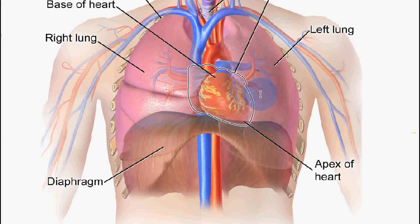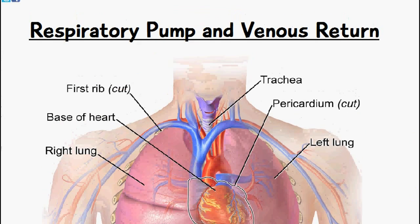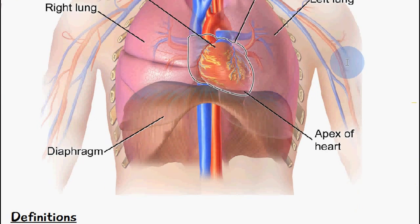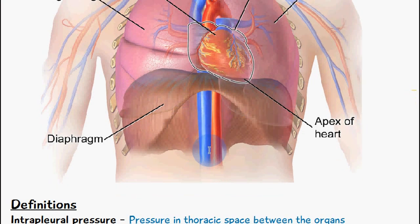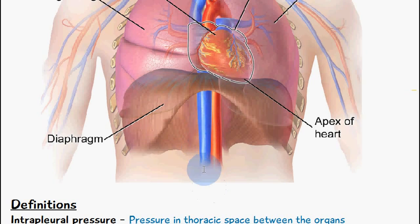Another mechanism affecting venous return: when a person inhales, the diaphragm moves downwards and presses on the abdominal organs, increasing the pressure in the abdominal region. This creates a pressure difference between the abdominal region and the thoracic region of the vena cava, which helps drive blood from the inferior vena cava up to the superior region.